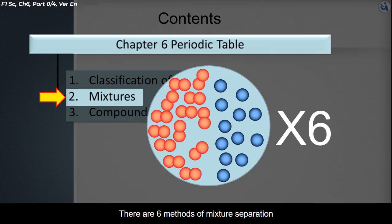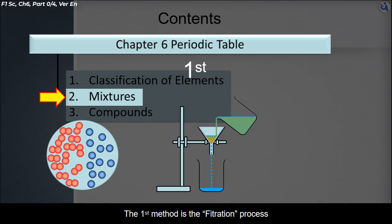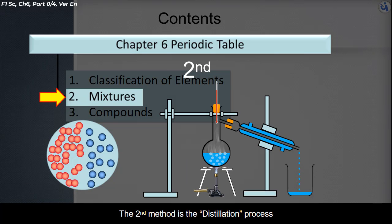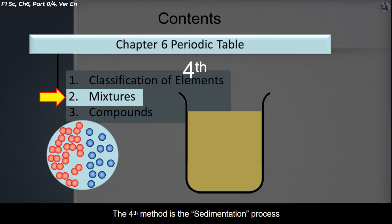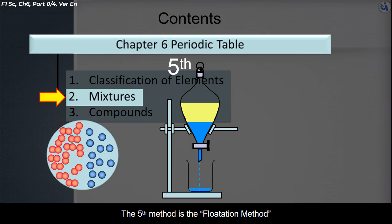There are six methods of mixture separation. The first method is the filtration process. The second method is the distillation process. The third method is separation using magnet. The fourth method is the sedimentation process. The fifth method is the flotation method. The sixth method is the chromatography method.